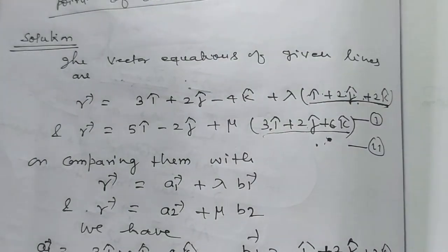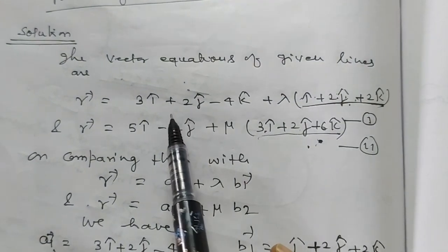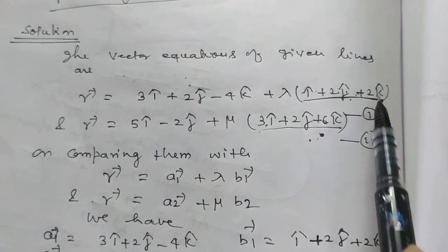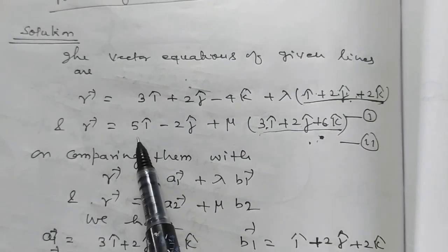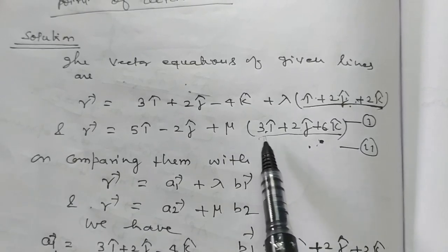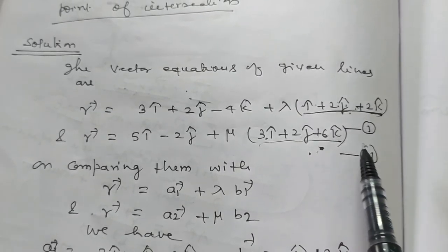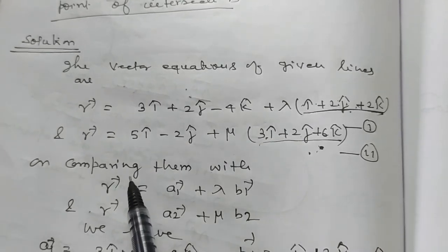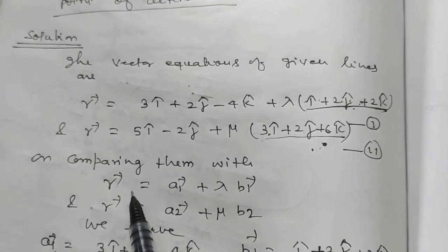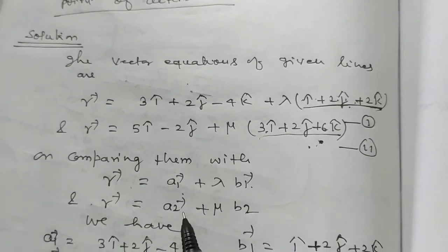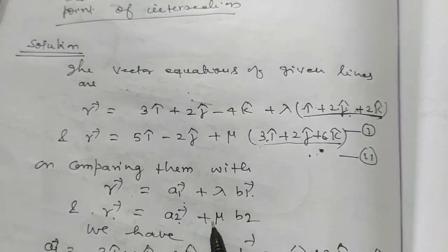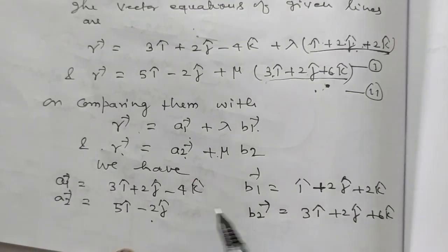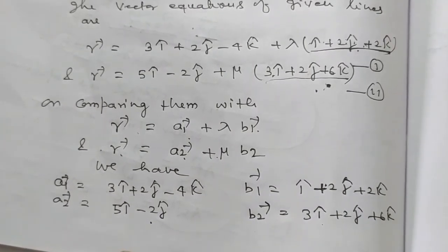Here what is given: vector r = 3i + 2j - 4k + lambda(i + 2j + 2k) — equation 1. Vector r = 5i - 2j + mu(3i + 2j + 6k). Clearly these two vectors are not parallel. Now we write in standard form: r = a1 + lambda*b1, r = a2 + mu*b2. So a1, a2, b1, b2 are identified accordingly.